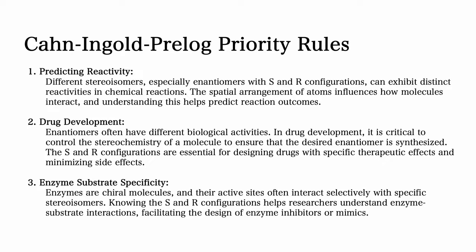Another reason why identifying molecular configuration is important is that enzymes and substrate molecules are highly specific and only react with certain types of molecules. Enzymes are chiral molecules, and their active sites often interact selectively with specific stereoisomers. Knowing the S and R configuration helps researchers understand enzyme-substrate interactions, facilitating the design of enzyme inhibitors or mimickers that are important in pharmaceuticals.